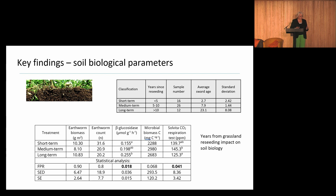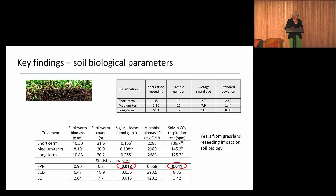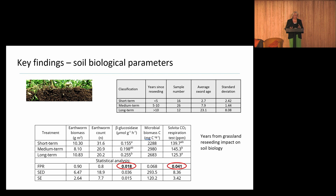Looking at the soil biological parameters associated with this data: earthworm numbers, earthworm biomass, beta-glucosidase, microbial biomass carbon, and Solvita — just for grassland soils. The relationships between these biological parameters and land use do change depending on whether it's arable or grassland, but we are getting significant correlation between sward age and beta-glucosidase. The older the sward, the more beta-glucosidase, indicating it could potentially be a proxy for a change in soil carbon.